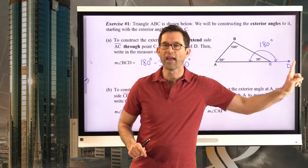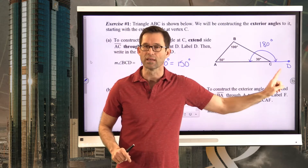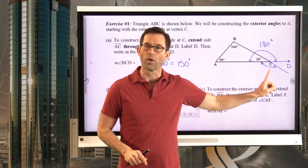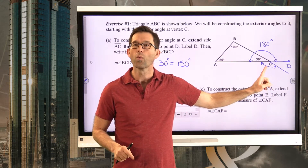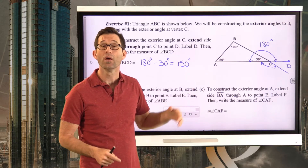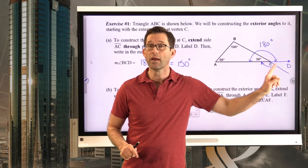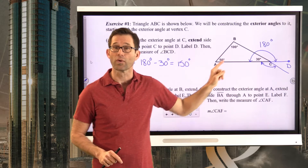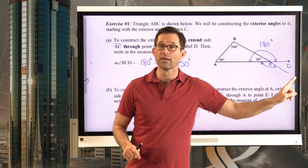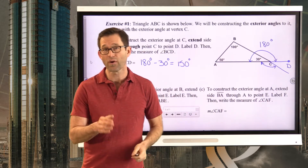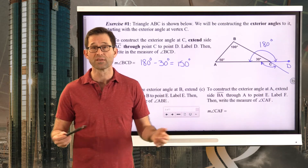You might wonder why I extended side AC and not side BC. I could have also extended BC and created an exterior angle there — that exterior angle on the outside would also have a measure of 150 degrees. So the answer is it really didn't matter. I could have extended either side from point C, and the exterior angle would still be 150 degrees.